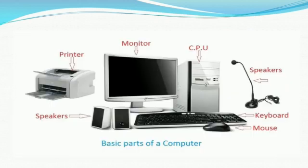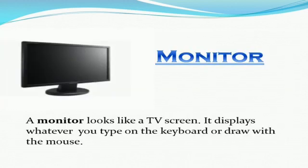As we can see in this picture, the basic parts of a computer are: monitor, printer, CPU, speakers, keyboard, and mouse. Let's study each one in detail. First is the monitor — a monitor looks like a TV screen. It displays whatever you type on the keyboard or do with the mouse.